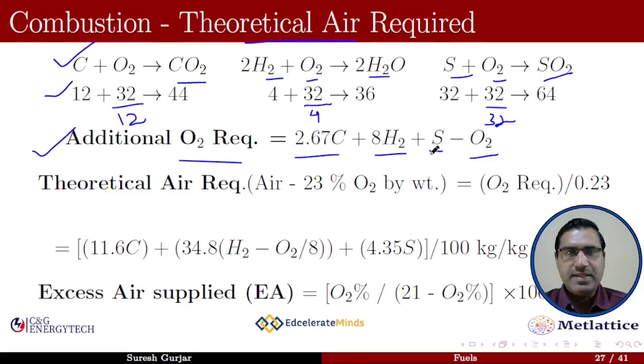Next is theoretical air required. We know that air consists of 23 percent oxygen by weight, so the theoretical air required is the additional oxygen required divided by 0.23, which equals [11.6C + 34.8(H2 - O2/8) + 4.35S] divided by 100 kg of fuel.